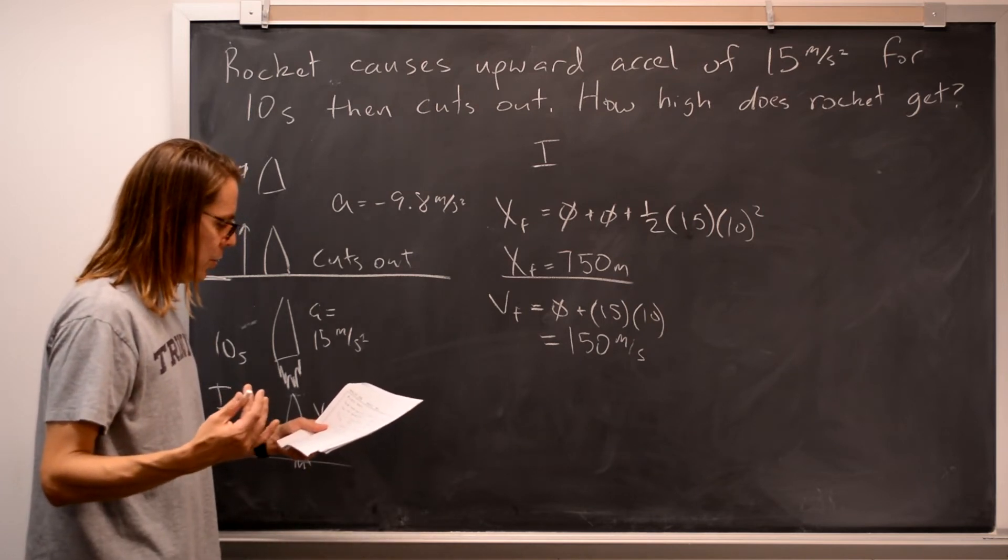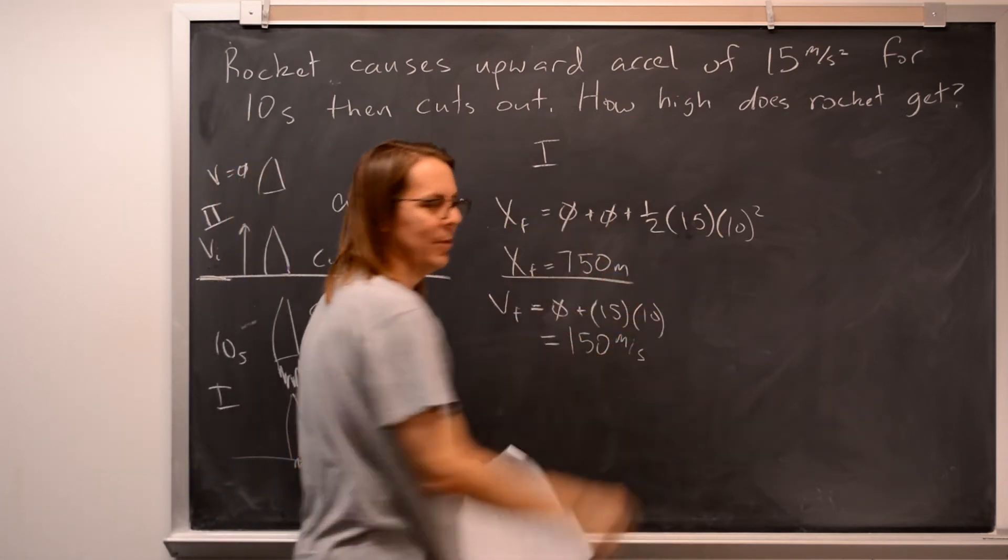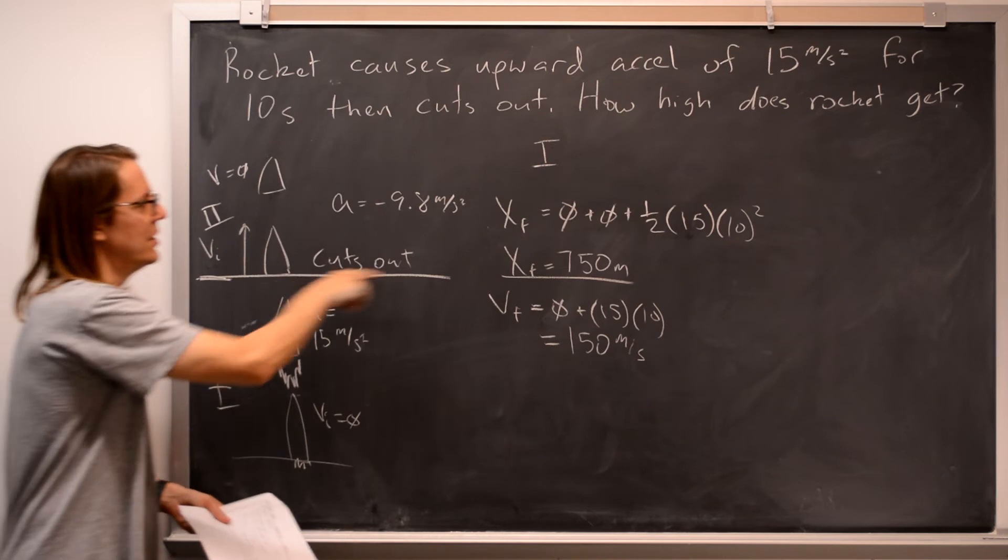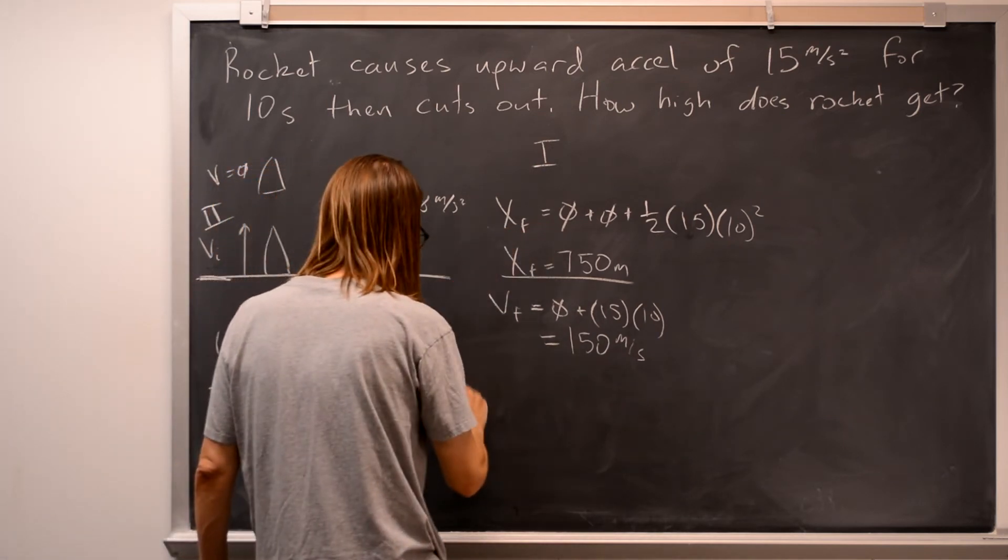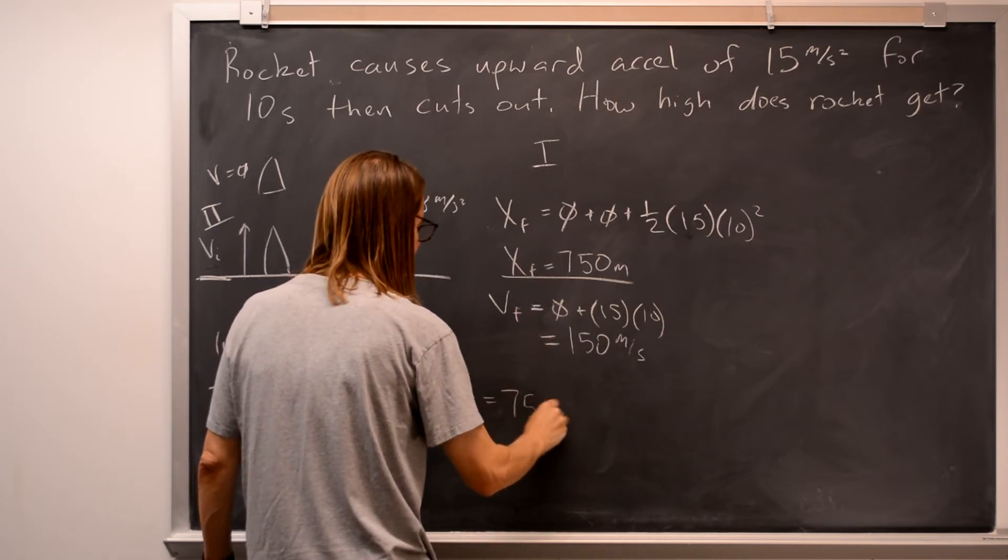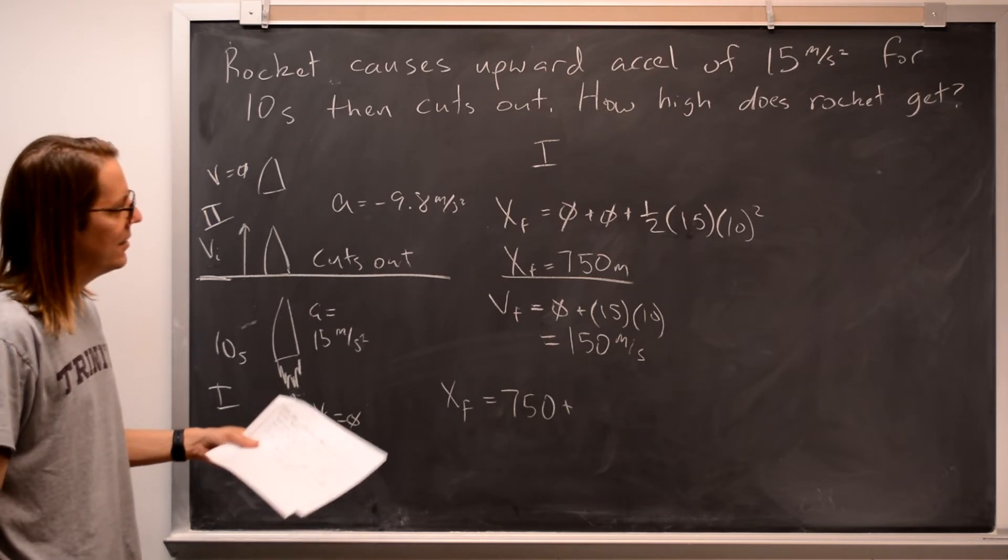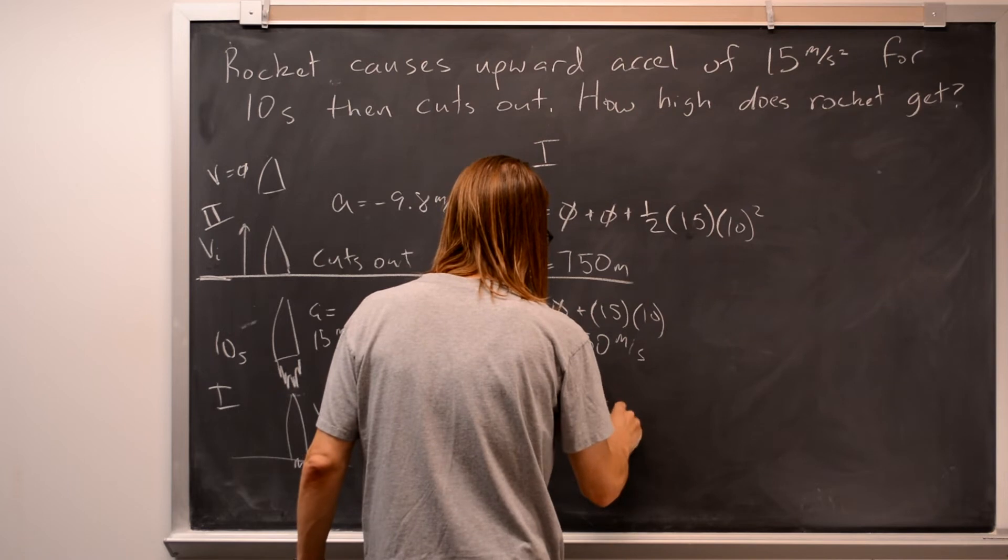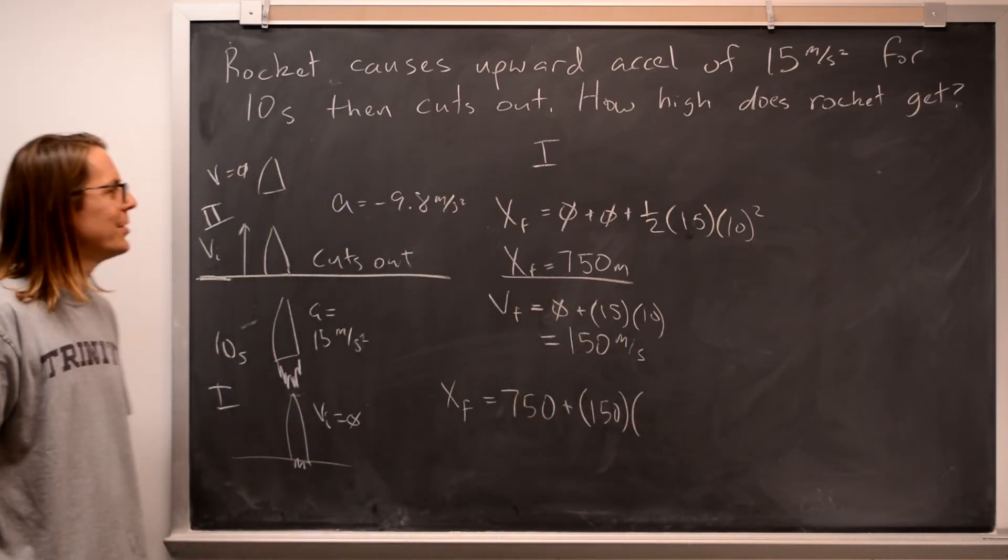So then we can say how high does it really get, then? We can actually apply this equation one time now for the final answer, because we can treat this 750 as just an initial position. All right, so the actual answer is initial position, 750, plus the initial velocity times time, 150. Oh, we don't know time. Oh shoot, we forgot to get time.